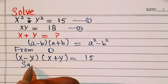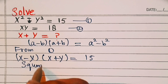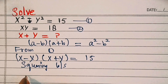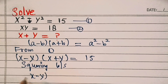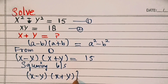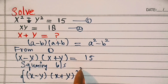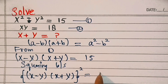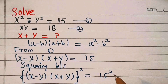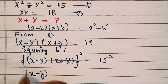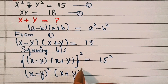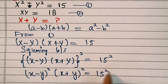Now we're squaring both sides. So this becomes (x minus y) into (x plus y), whole squared, equal to 15 squared. That means (x minus y) squared into (x plus y) squared equal to 225.